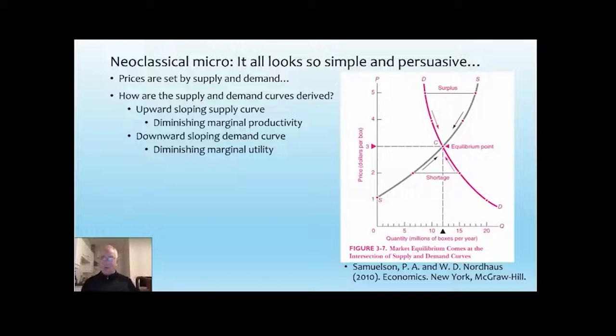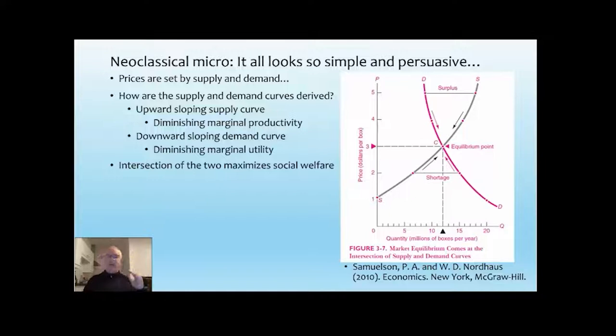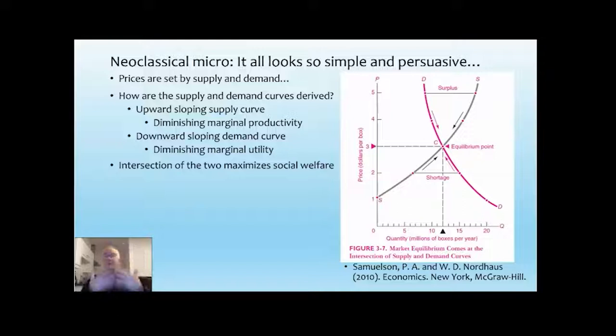The intersection of the two maximises social welfare, because since these are both marginal curves — the slopes of total curves — the slope of the demand curve gives you total utility, and the slope of the supply curve gives you total cost. Where the slopes are the same, the gap between the two is biggest. So this is where you maximise social welfare. That's the whole idea of neoclassical economic theory.